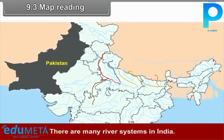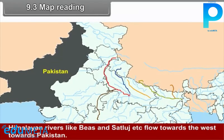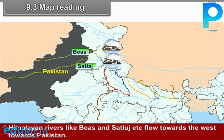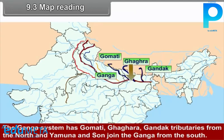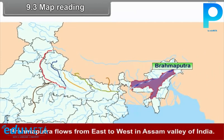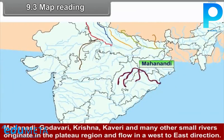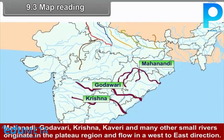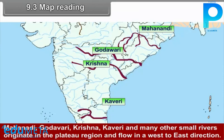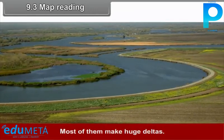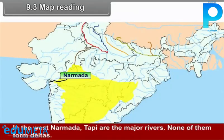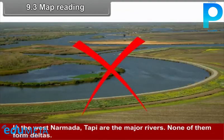There are many river systems in India. Himalayan rivers like the Beas and Sutlej flow towards the west towards Pakistan. The Ganga system has the Kosi, Ghagra, and Gandak tributaries from the north, and the Yamuna joins the Ganga from the south. The Brahmaputra flows from east to west in the Assam Valley. Mahanadi, Godavari, Krishna, Kaveri and many other small rivers originate in the plateau region and flow west to east — most of them form huge deltas. In the west, the Narmada and Tapti are the major rivers and none of them form deltas.